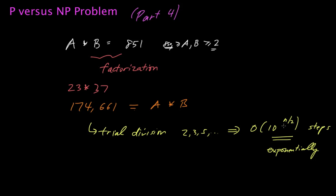This number, 10 to the n over 2, gets really big, really fast, even for modest values of n.